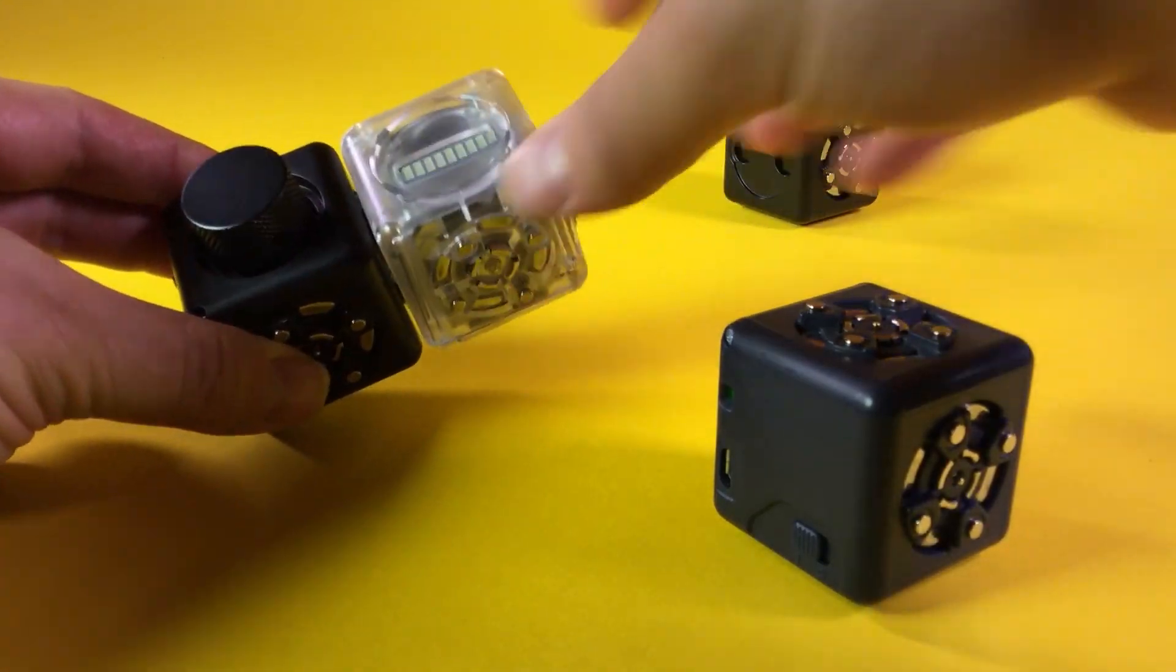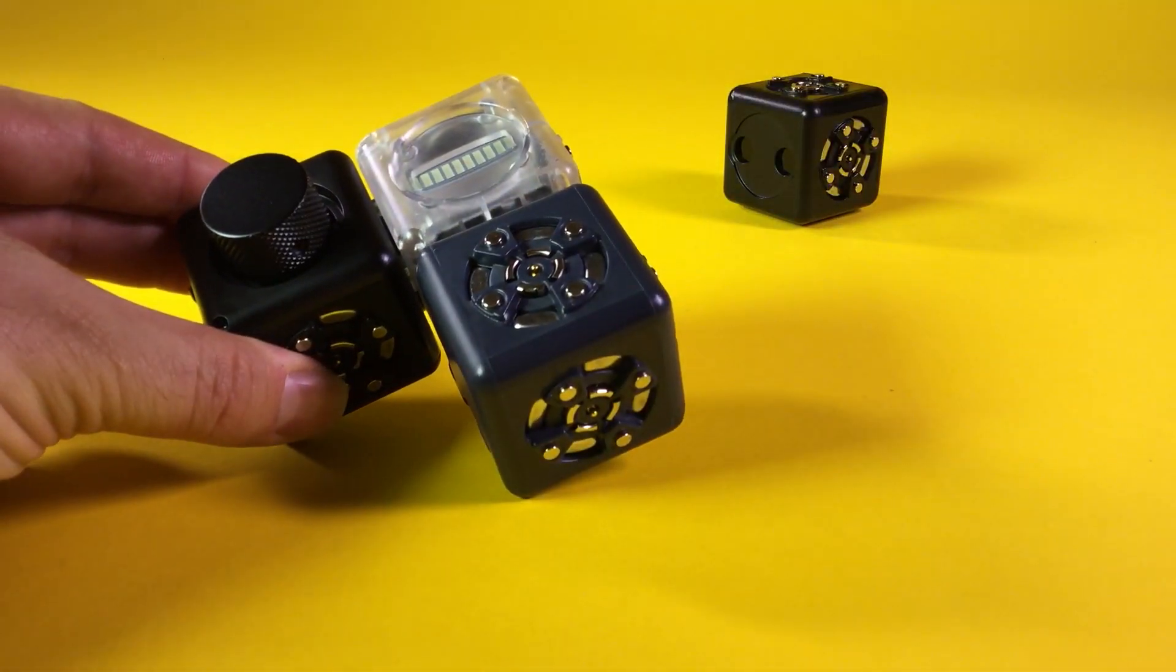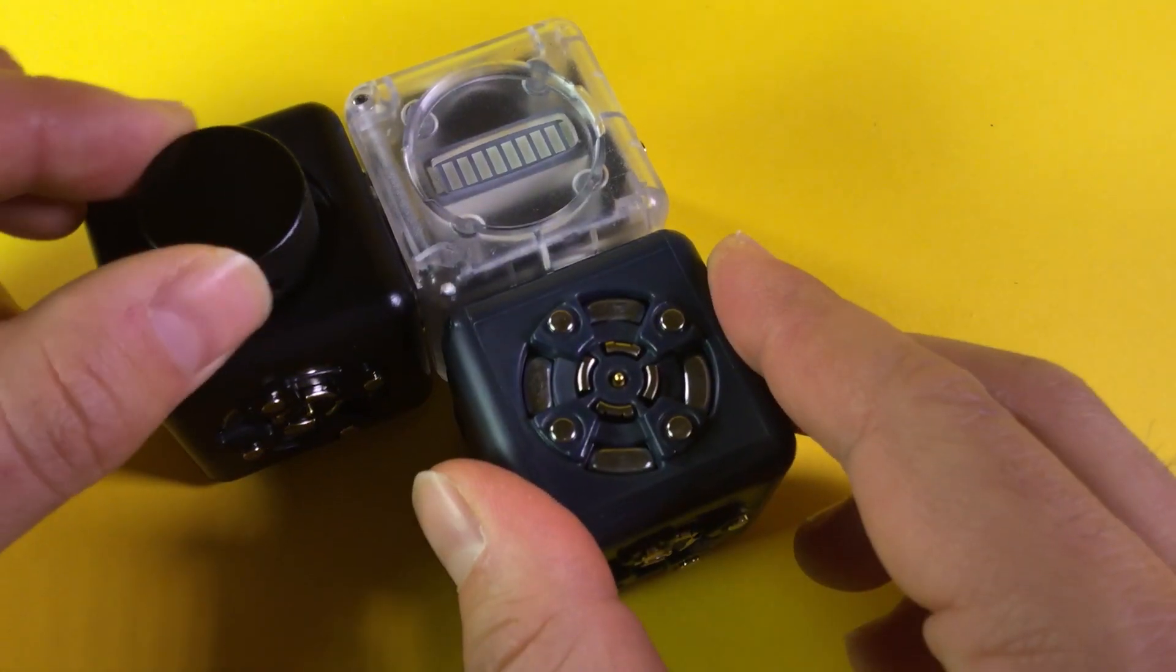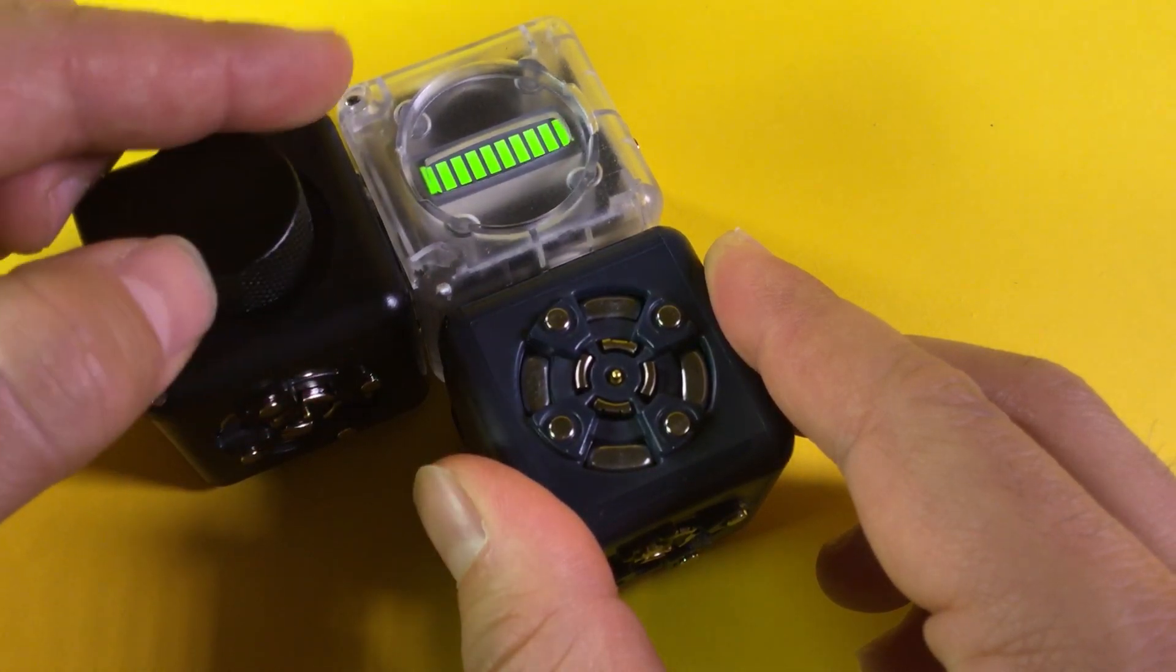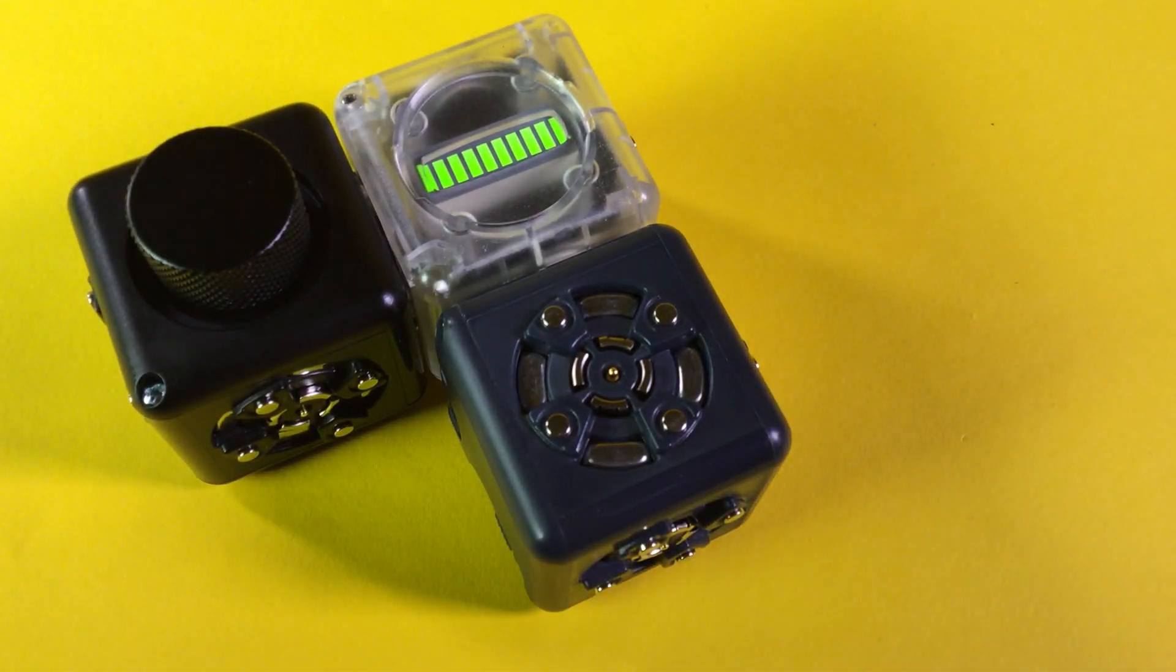This time, we'll use the knob and distance sensor to control our bar graph cubelet. The knob cubelet allows us to set the number at a specific level. If we set it to a high number, the bar graph outputs a high value.